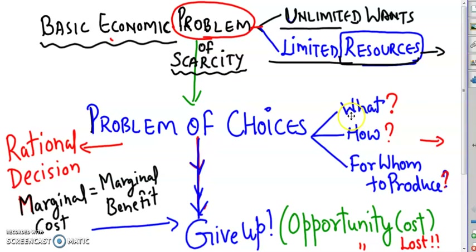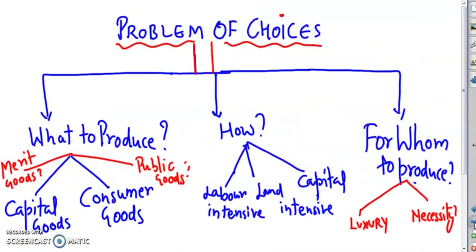Every economy has the same question. How to produce relates to the process. And for whom to produce relates to the distribution theory. The problem of choices are: what to produce, how to produce, and for whom to produce — which every nation decides on.